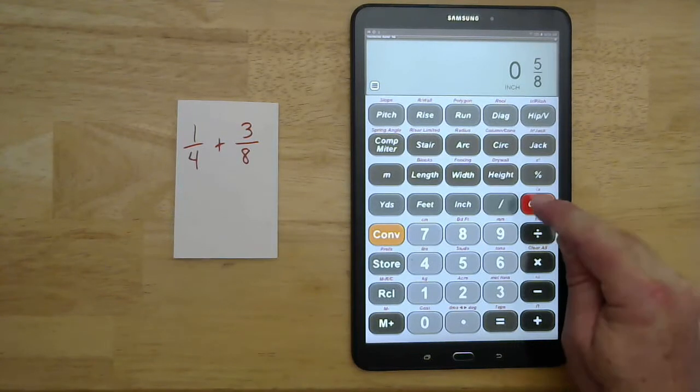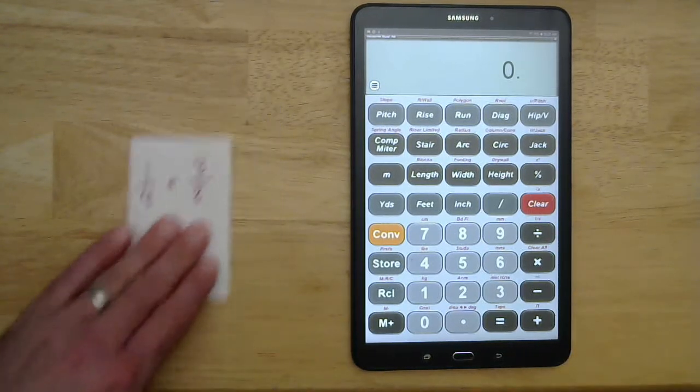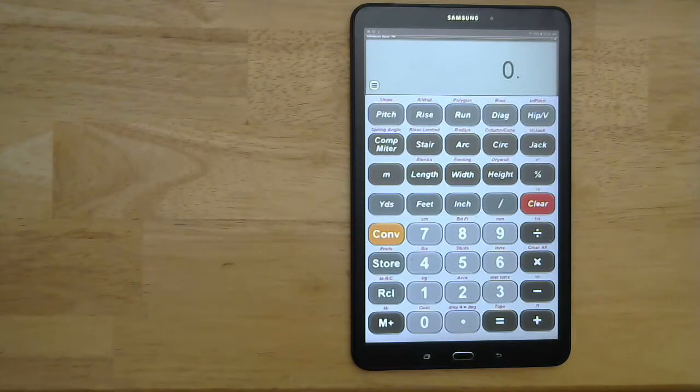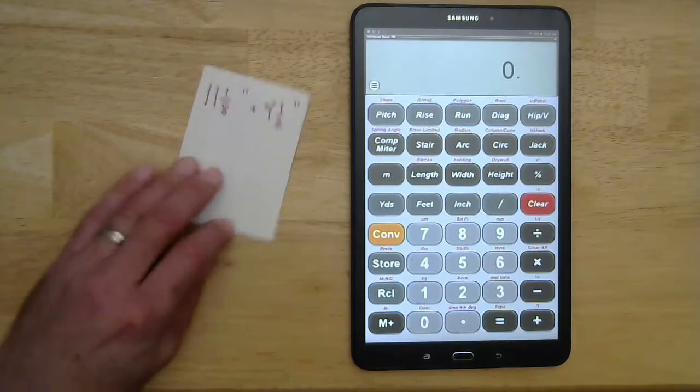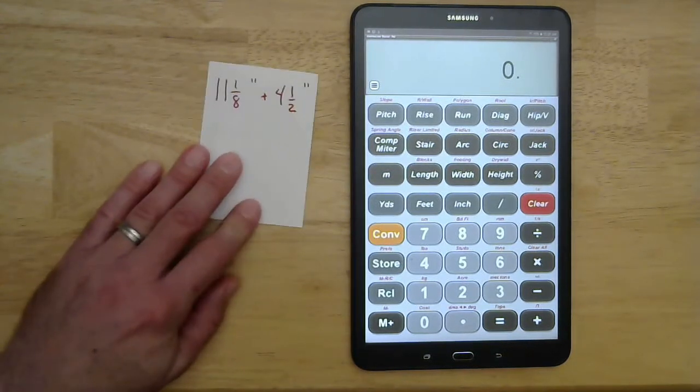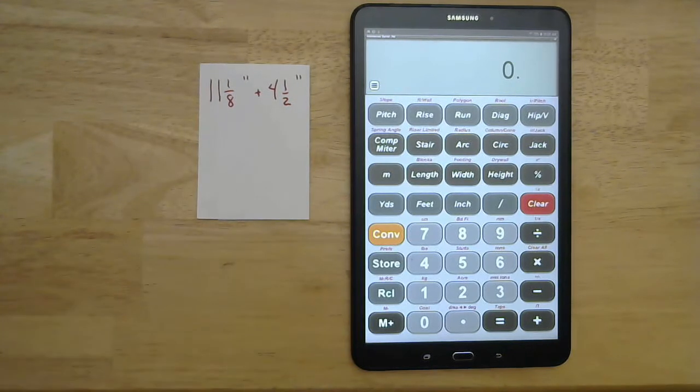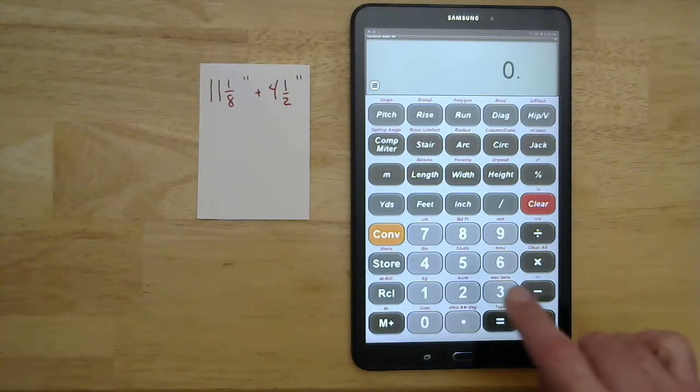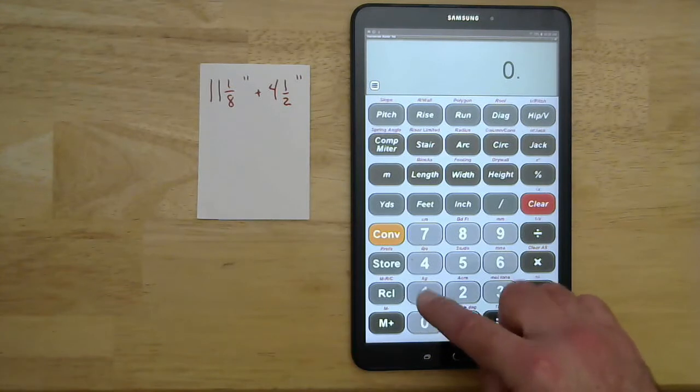So practice that on yours. Now we're going to do what if we have a whole number of inches in addition to fractions. So I have eleven and an eighth inches, and I want to add it to four and a half inches. So that works a little differently. Watch what I'm going to do here.